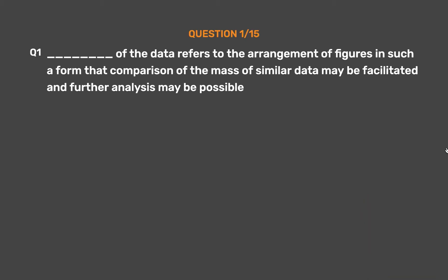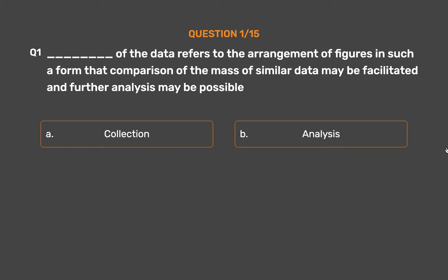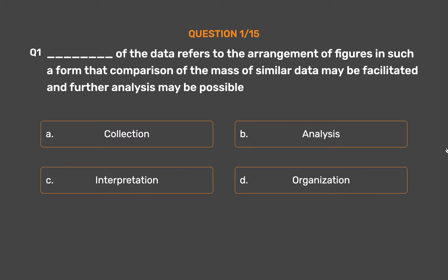Question number 1. Underscore of the data refers to the arrangement of figures in such a form that comparison of the mass of similar data may be facilitated and further analysis may be possible. Option A: Collection. Option B: Analysis. Option C: Interpretation. Option D: Organization. The correct answer is Option D: Organization.